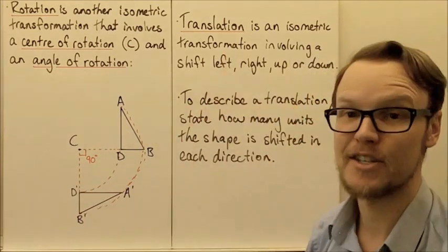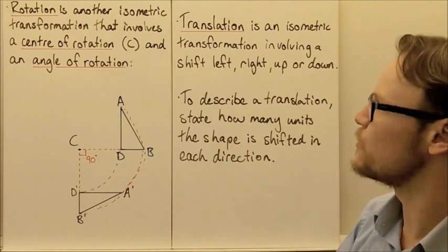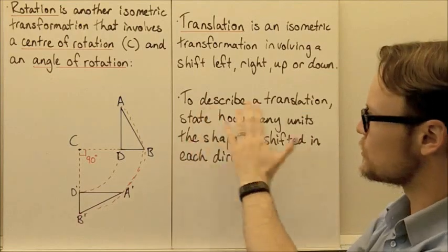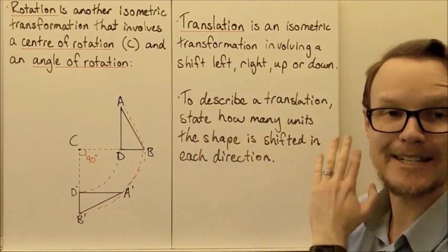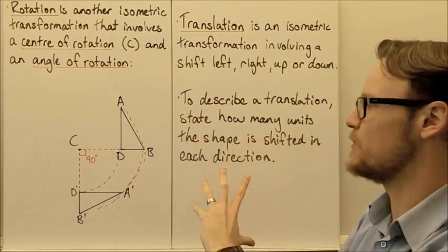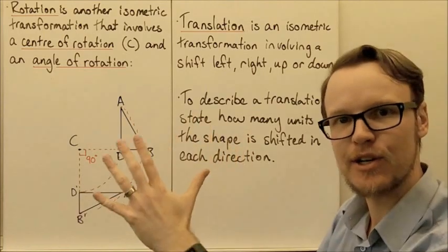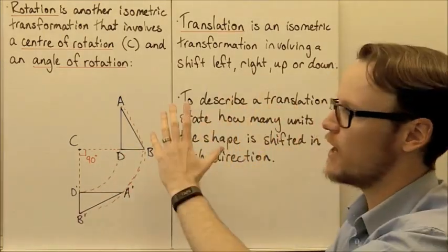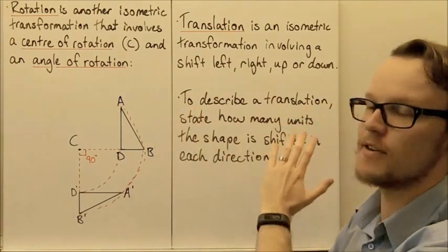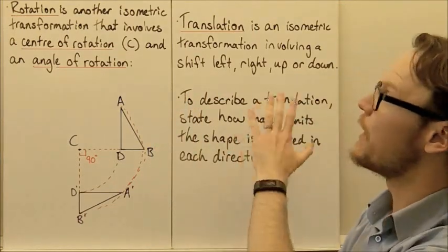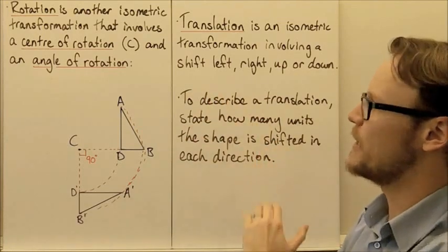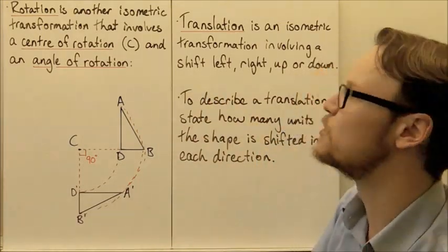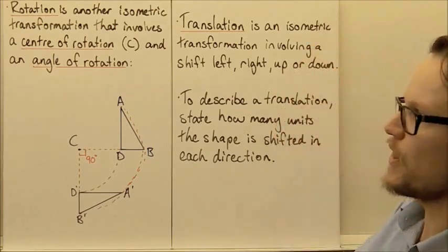Translation is an isometric transformation that involves just shifting a shape — moving it up, down, left, or right. To describe a translation, we need to state how many units the shape has shifted in each direction. It might be shifted up three units and to the right five units, and we need to describe how far we have translated that shape or object.